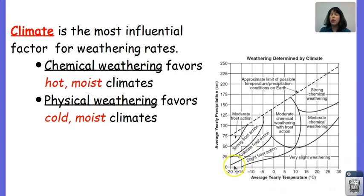And when we're given a temperature or precipitation amount, we can go to this chart and figure out what type of weathering would we expect to find, or how much weathering in some cases, too. So for example, if we're someplace where it's 20 degrees Celsius, and has an average yearly precipitation of 25 centimeters, you would tend to find very slight weathering in that region.